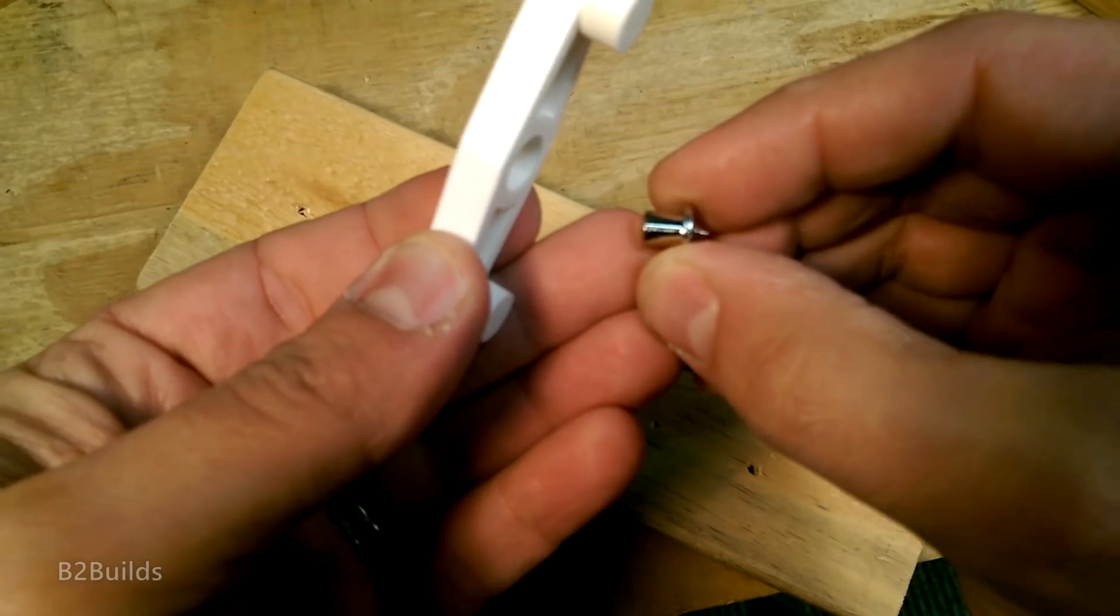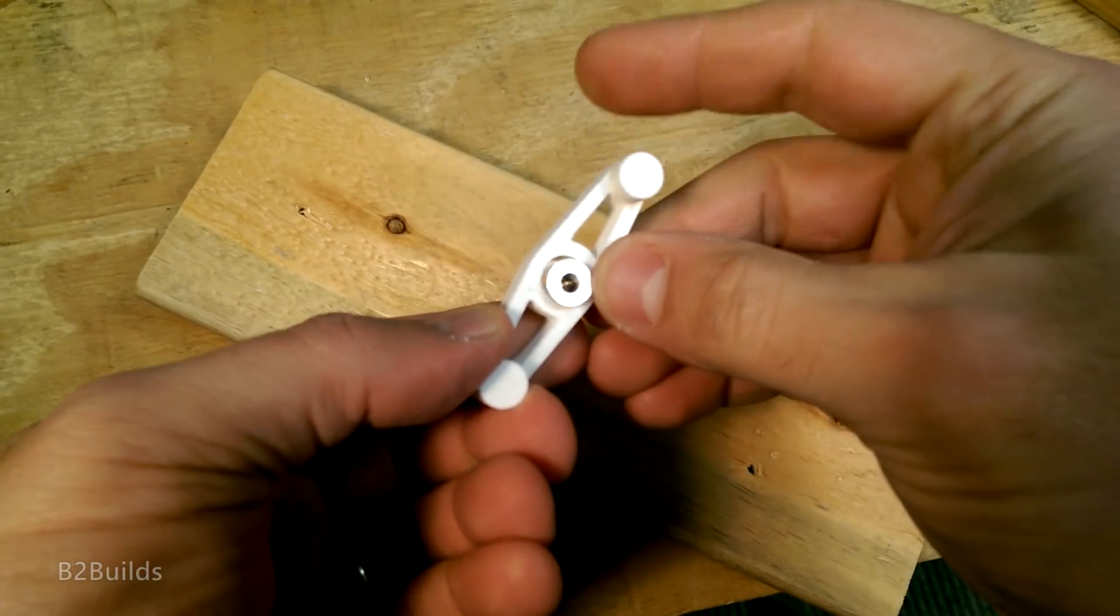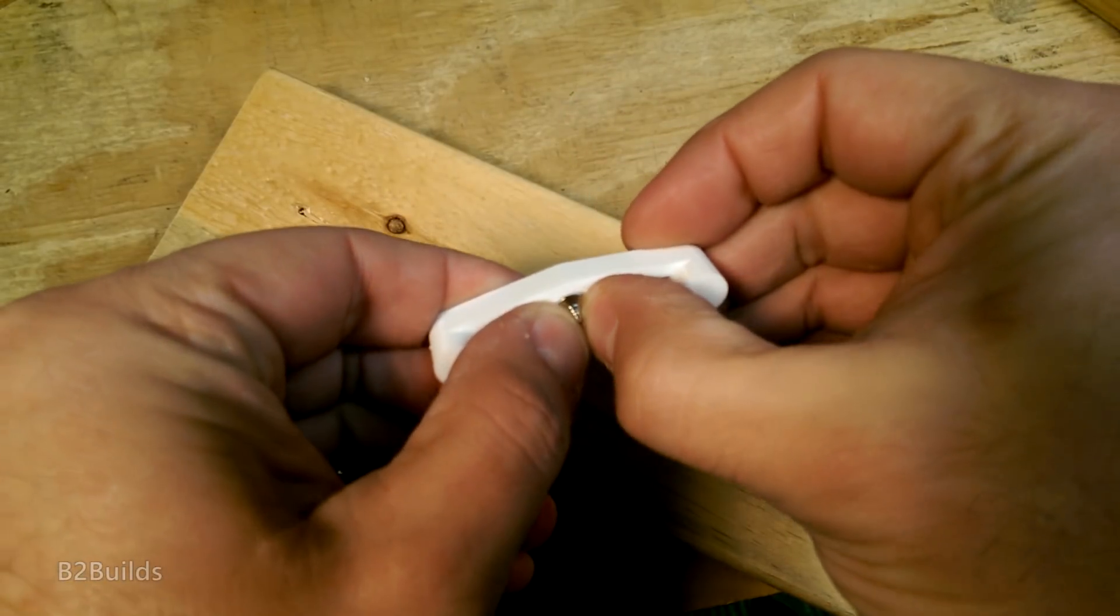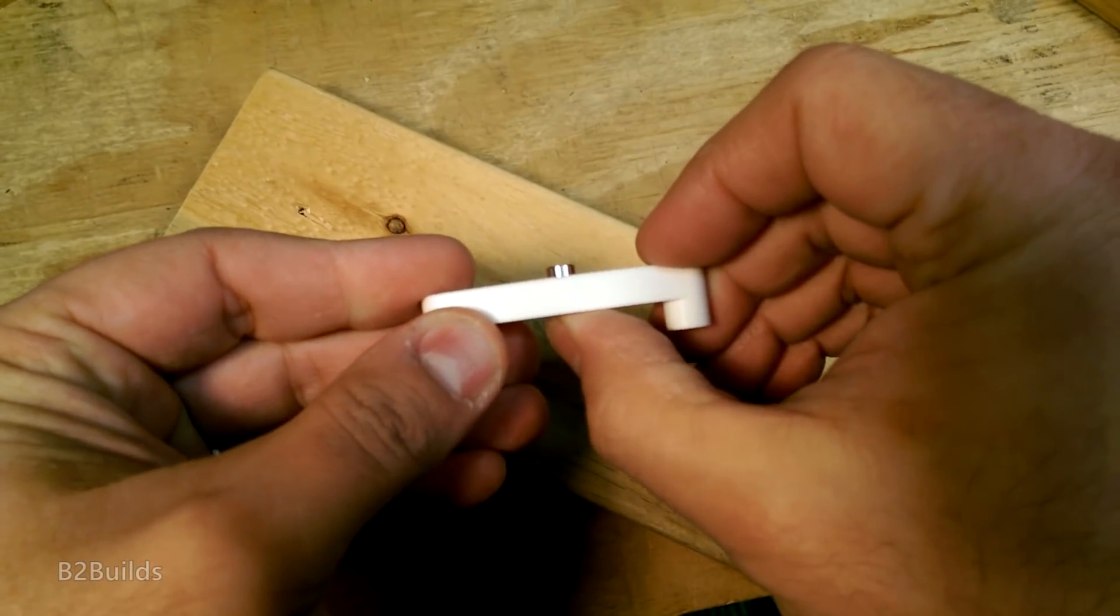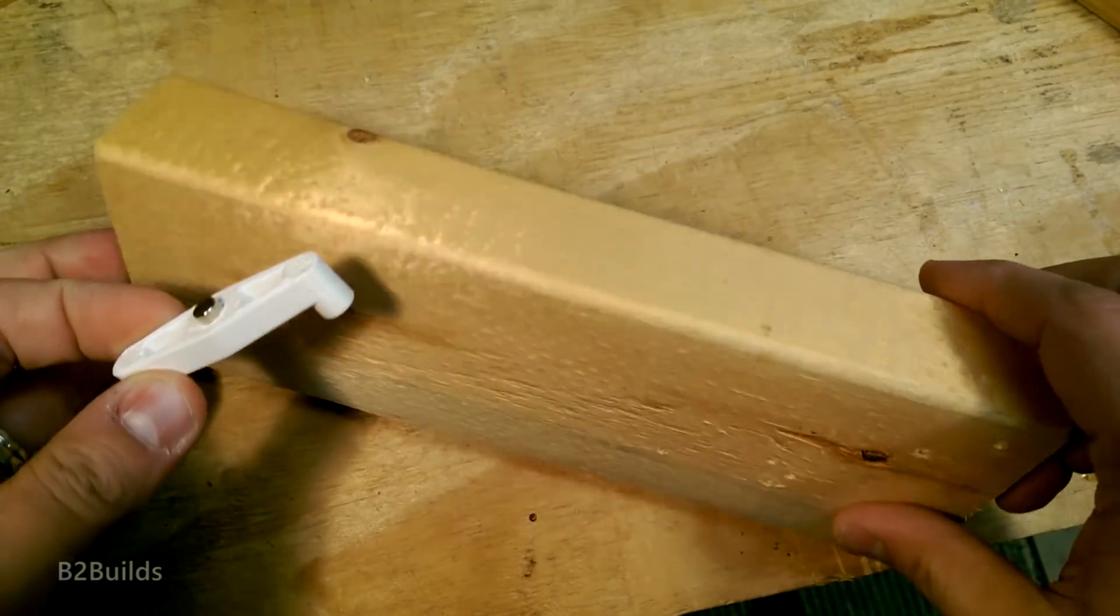Of course I'll include some links in the description below of where you can find the dowel centers that I used as well as where you can get the model of the center finder that I made here, so if you'd like to print your own that's certainly an option.